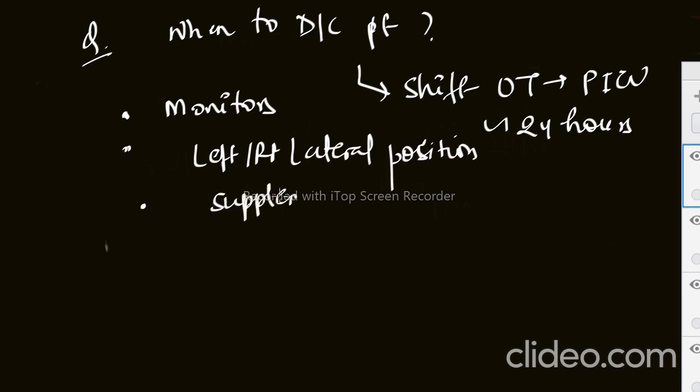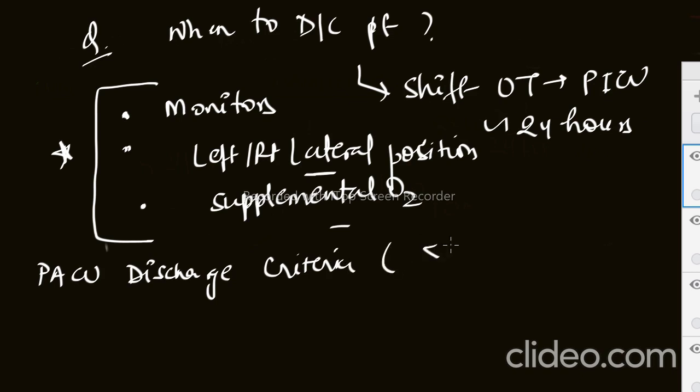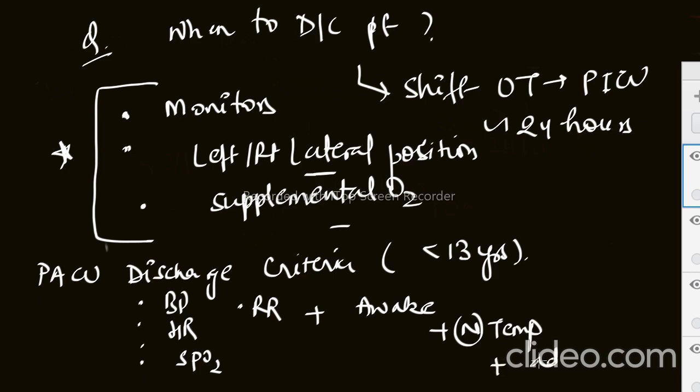With supplemental oxygen, with all the emergency medication and airway equipment, etc. During shifting, keep in mind the patient should be shifted in lateral position with oxygen, always oxygen support. There is one PACU discharge criteria also. For patients under 13 years of age, they give a separate PACU discharge criteria in which the components are: BP, heart rate, saturation, respiratory rate. Plus you can remember it like - is the patient fully awake or still sedated? The patient should not be having any fever and the patient should have adequate urine output. If the PACU discharge criteria is met, only then can you discharge the patient.